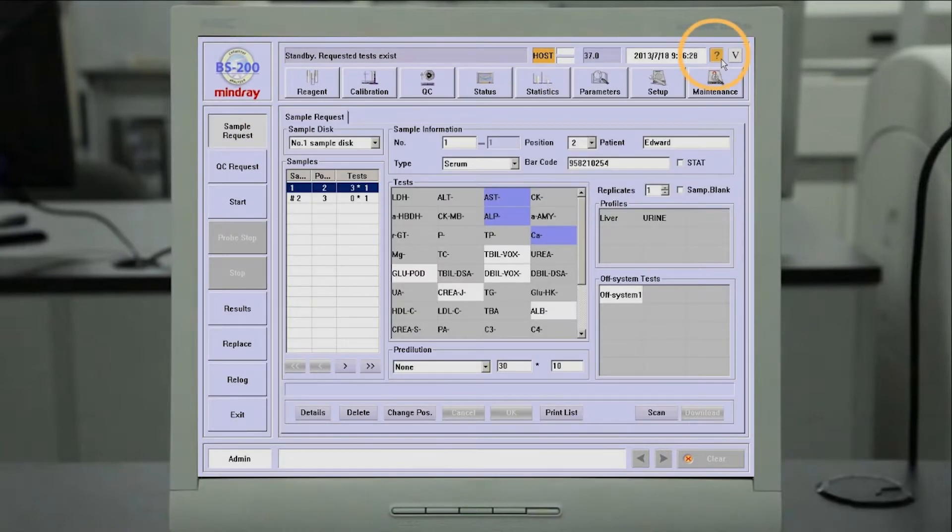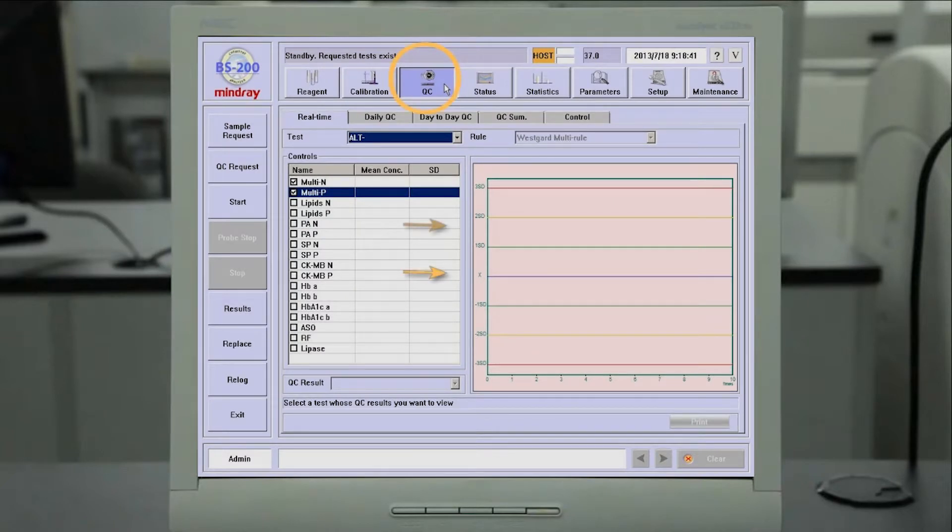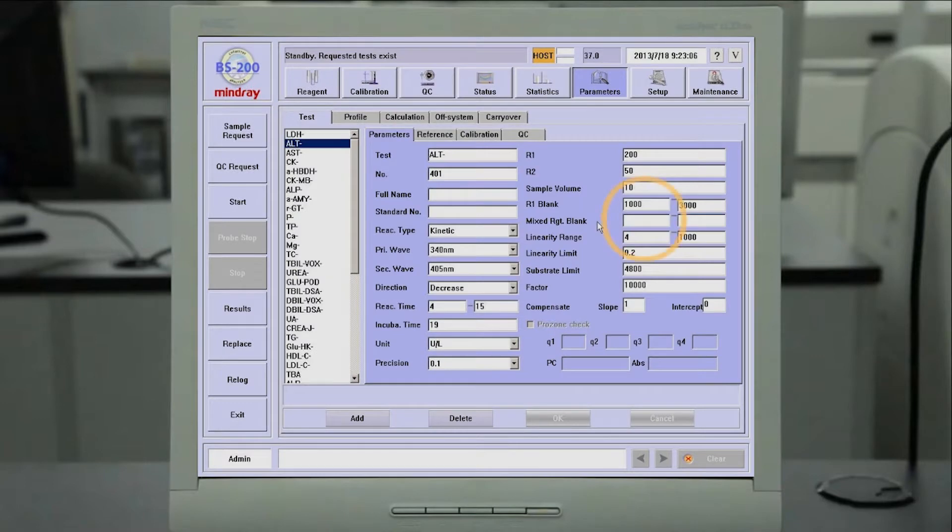Additional features include an online operation manual, Levi Jennings charts, Westgard QC rules, and automatic reagent link checks.